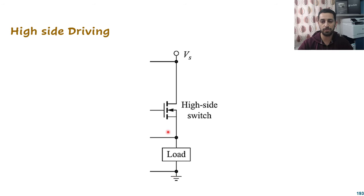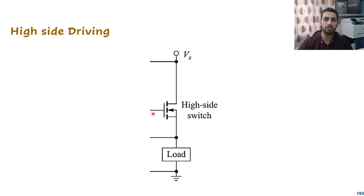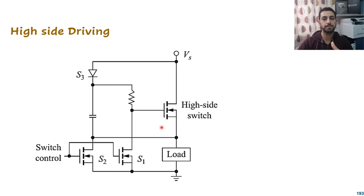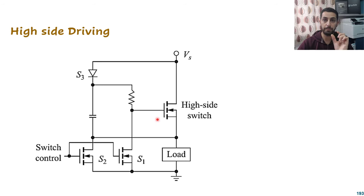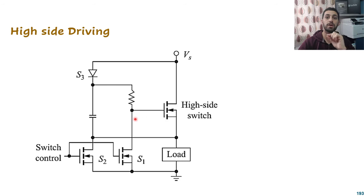When I apply 5V for high side driving, that 5V is referenced to the ground, not to the source. If I apply 5V referenced to ground, I am applying less voltage than if referenced to the source. That's why high side driving needs more consideration to switch the high side MOSFETs properly. That's why we have a different circuit with a different concept — I will talk about two designs.